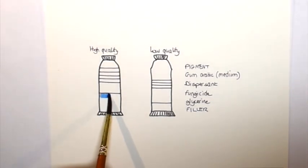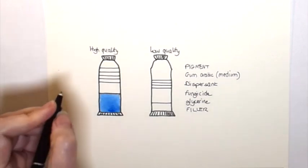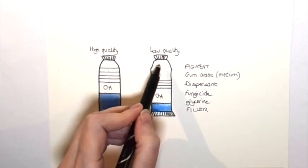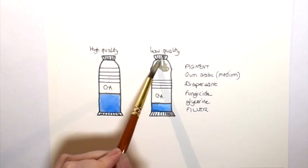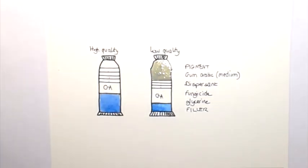In a high quality paint, there is a high proportion of pigment. Then there's the gum arabic. And then there are the other ingredients that are part of the formulation. In a low quality paint, there is a lot less pigment because pigment is the expensive part of the paint. So if you're a manufacturer and you want to produce paint cheaply, you don't put that much pigment in it. Then you still need to have the gum arabic and then the other ingredients. And then you have a big gap in your tube. And this is where the filler comes in. Now that filler usually is chalk. And chalk is opaque. So this paint, straight away, whatever the pigment you've used, is no longer transparent.